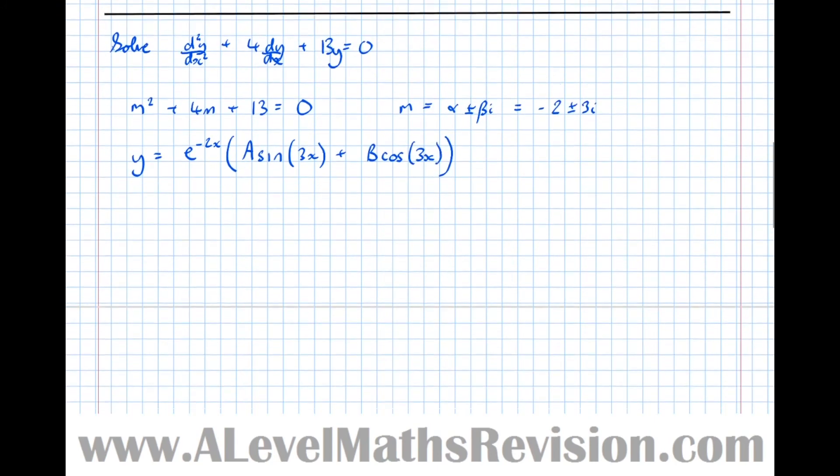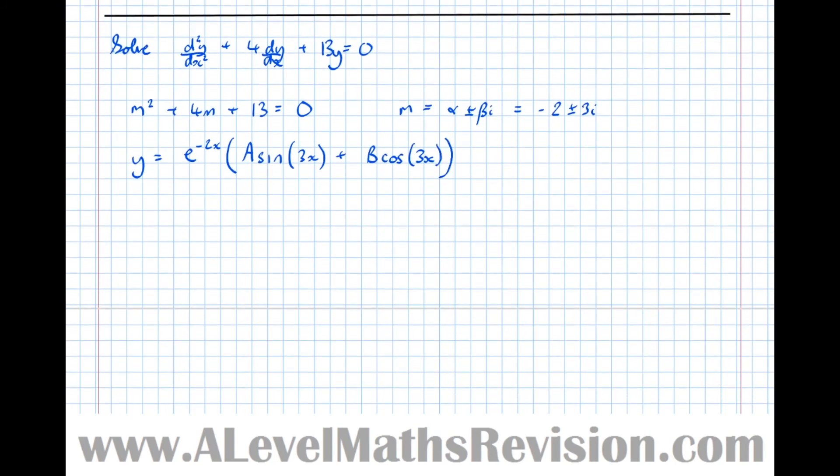Easy as that. So let's do another one that has just imaginary roots, because we haven't really explicitly covered that case yet. But it is covered by all the work that we've just done. So how about solve d²y/dx² + 9y = 0, which means that m² + 9 = 0, which means that m² = -9, which means that m = ±3i if we square root both sides.